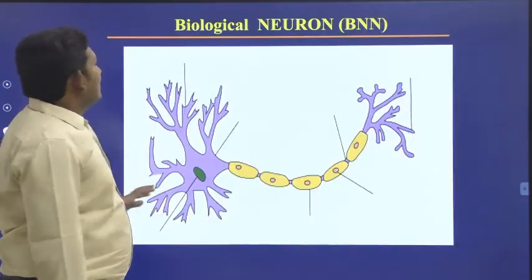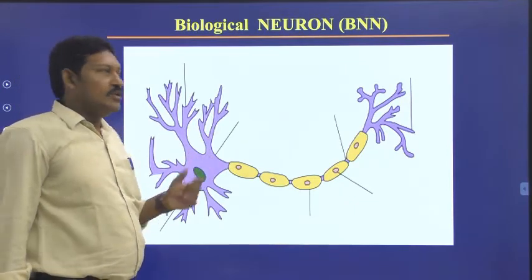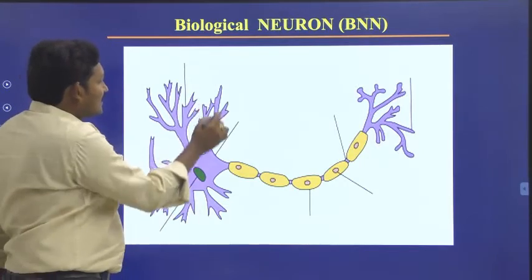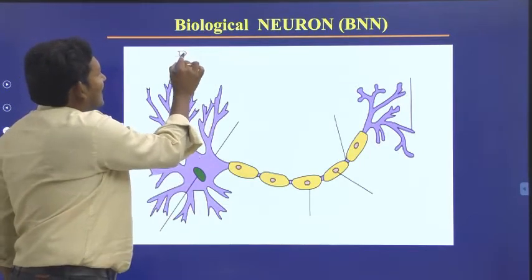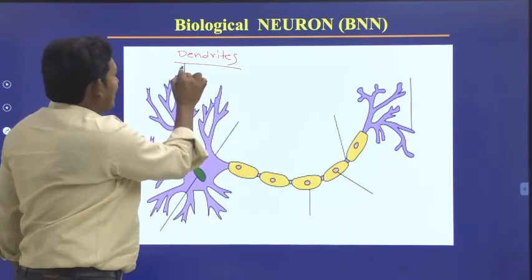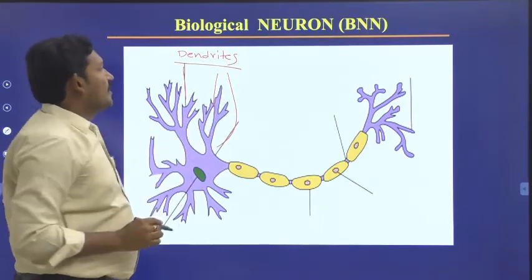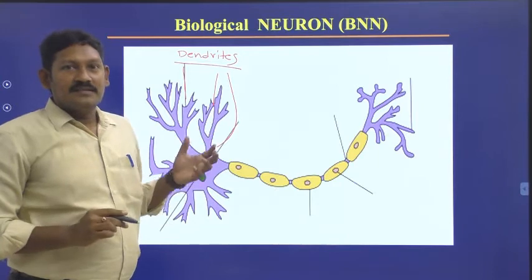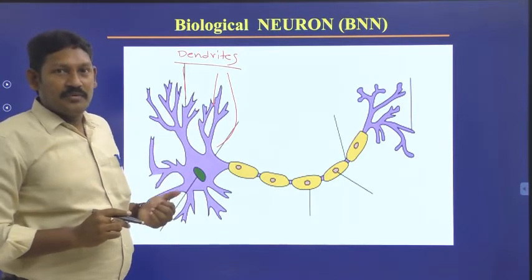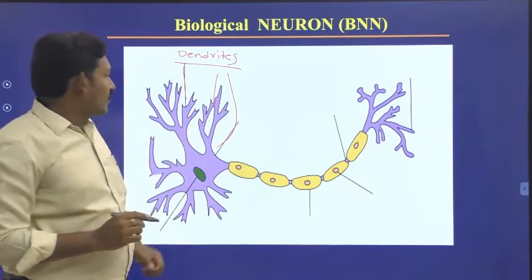We will see a Biological Neural Network. This is a single neuron — this is the picture of a single neuron. All these are dendrites. A dendrite will act as an input; it collects the input. The dendrites are helpful for collecting the inputs.